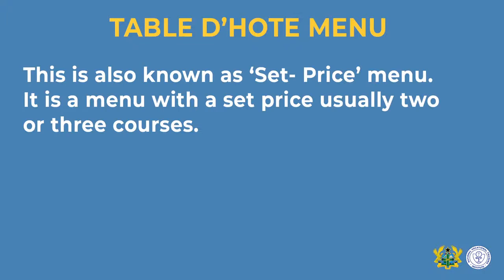The table d'hôte menu is also known as a set price menu — a menu with all the dishes put together to form a complete menu. With this menu, there is no flexibility of selecting from the various dishes; it has already been selected and priced together. So the flexibility is not there as compared to the à la carte menu. Let us look at an example of a table d'hôte menu.